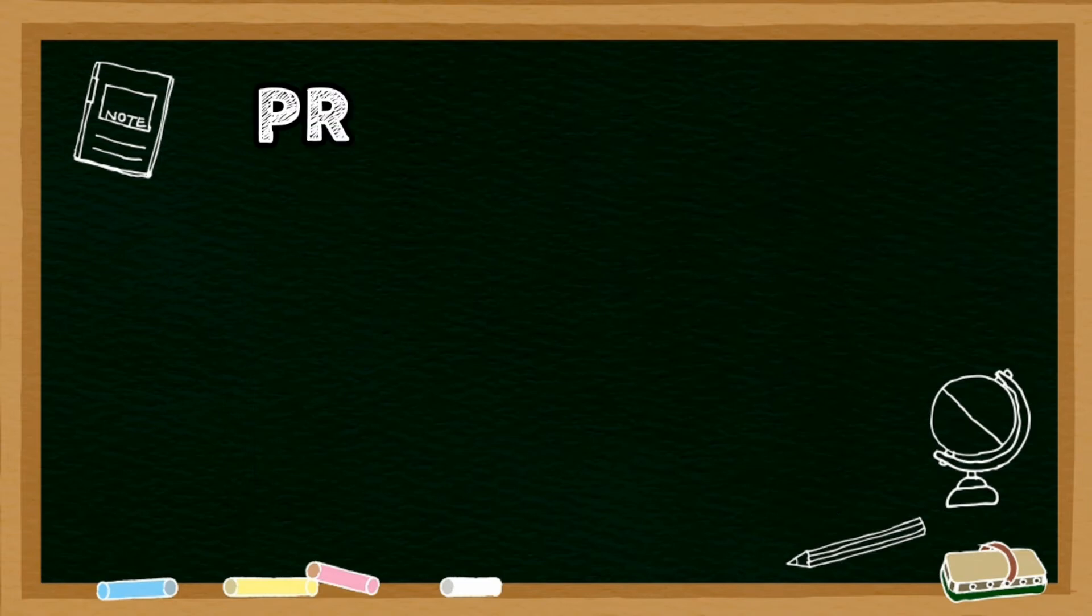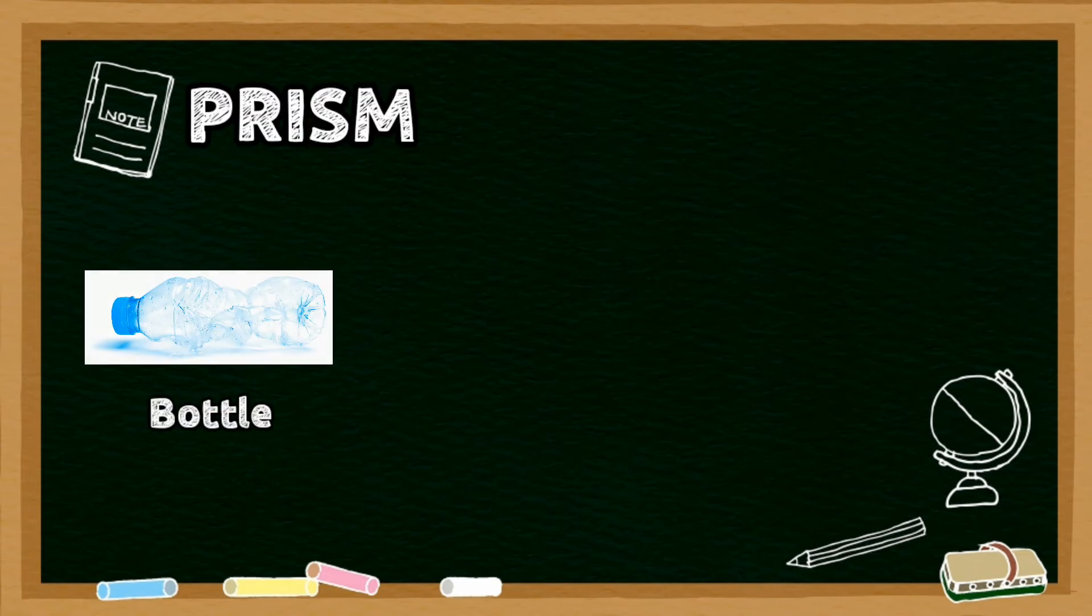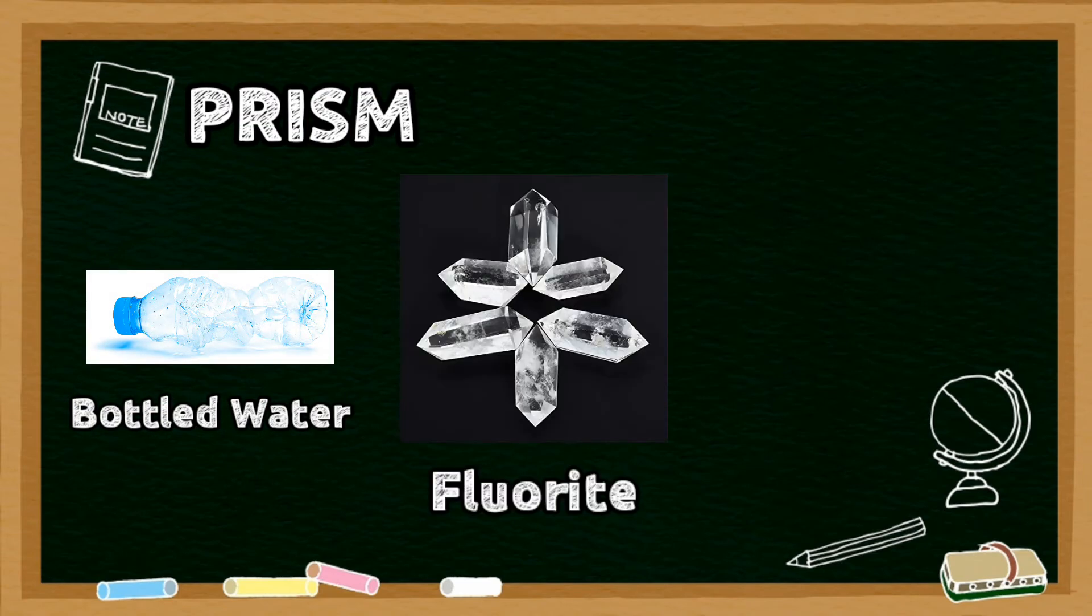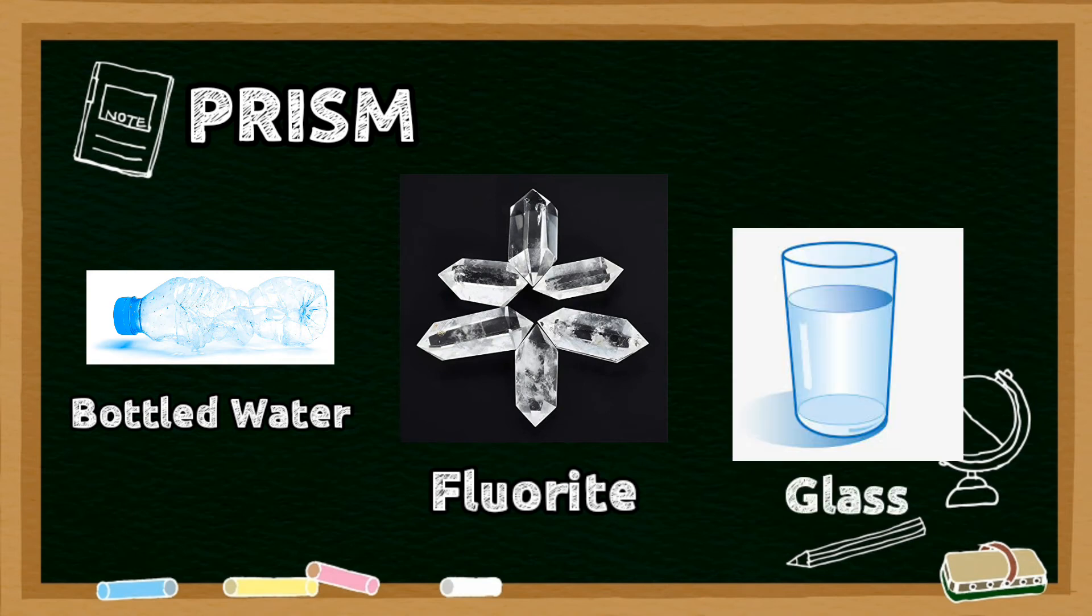A prism can be made from any transparent materials like plastic, bottled water, fluorite, crystals, glass, or even water can act as a prism.